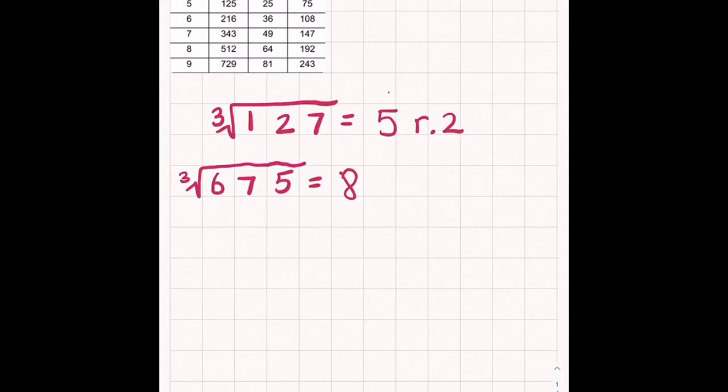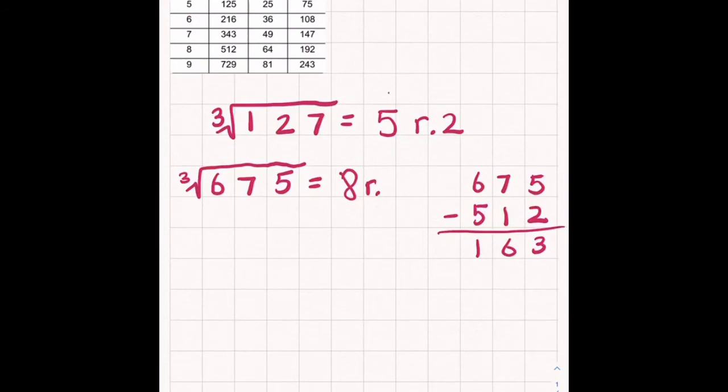Well, I need to find out my remainder. So I'm going to do some math off to the side. I'm going to take the cube root number and subtract it by the cube of 8. And I get 163. So the cube root of 675 is equal to 8, remainder of 163.